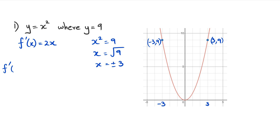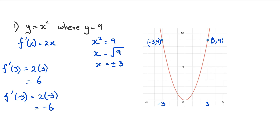For the first case, f′(3) gives us two times three, which equals six. For the second case, f′(-3) gives us two times negative three, which equals negative six. The gradient of six is along that side — it's positive, going up, and fairly steep. The gradient of negative six is on the other side, at the point (-3, 9).